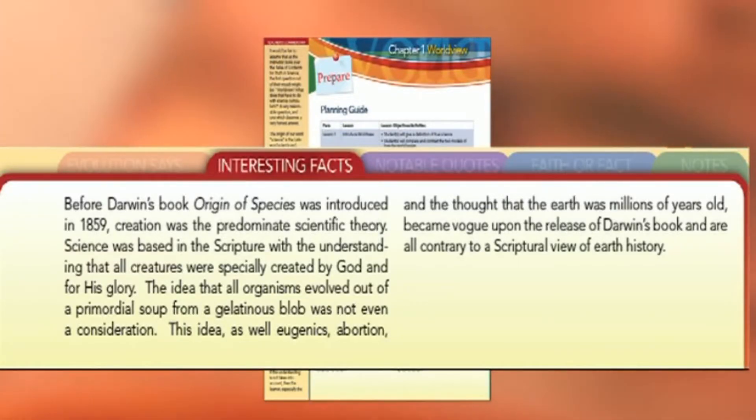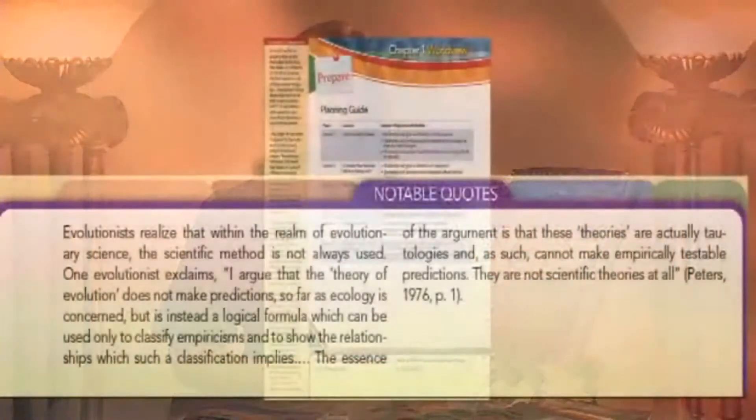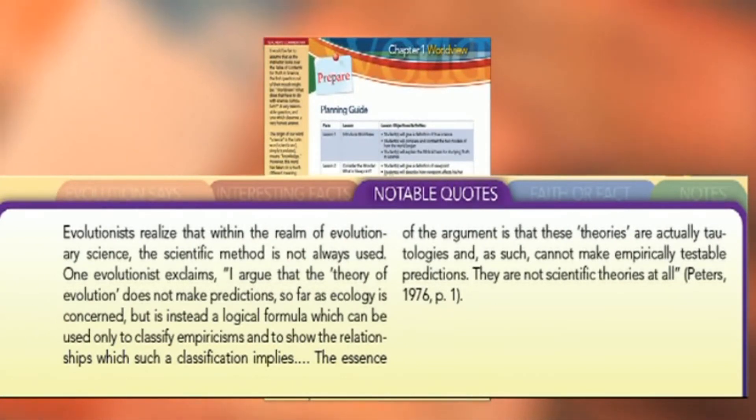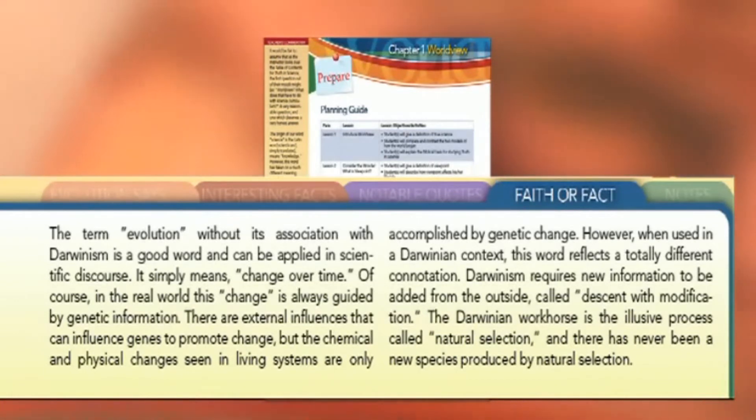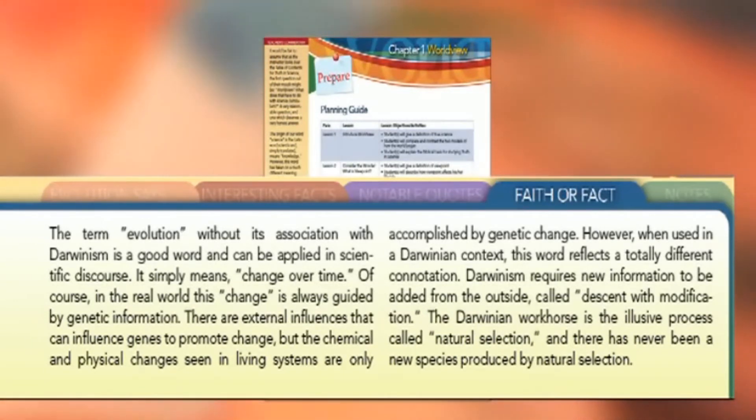Interesting Facts are just that — interesting and usually little-known facts about the chapter subject matter. While not always pertinent to a specific day's lesson, they will always be connected in some way to the chapter subject. Notable Quotes is a section where we list quotations from notable people or about a notable position. Here you will find quotes from both creationists and evolutionists, atheists and Christians, so that you may see some of the stark differences in the two worldview positions. Faith or Fact is the section that deals specifically with the understanding that much of what is presented as scientific fact is in reality a position of faith. One of the greatest misconceptions in this debate is that evolution is fact-based and creation is faith-based — the things revealed in this section will blow that assertion out of the water.